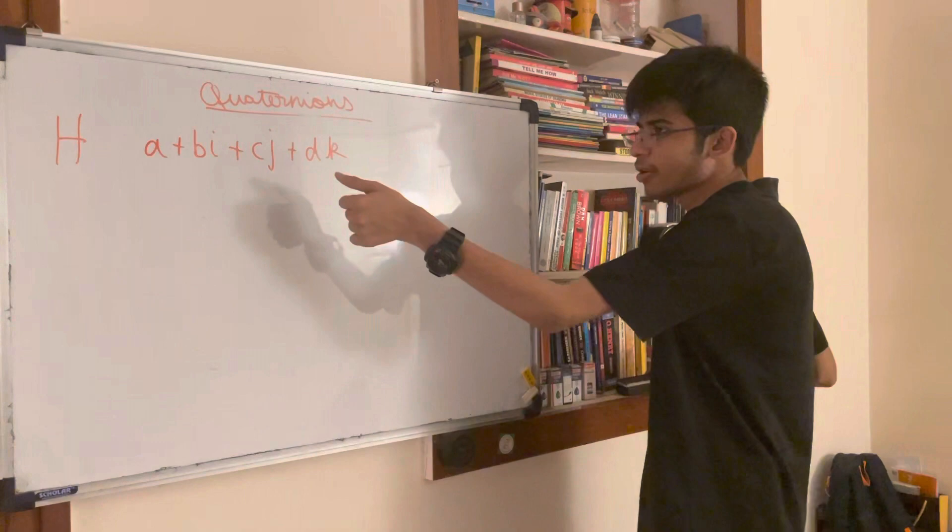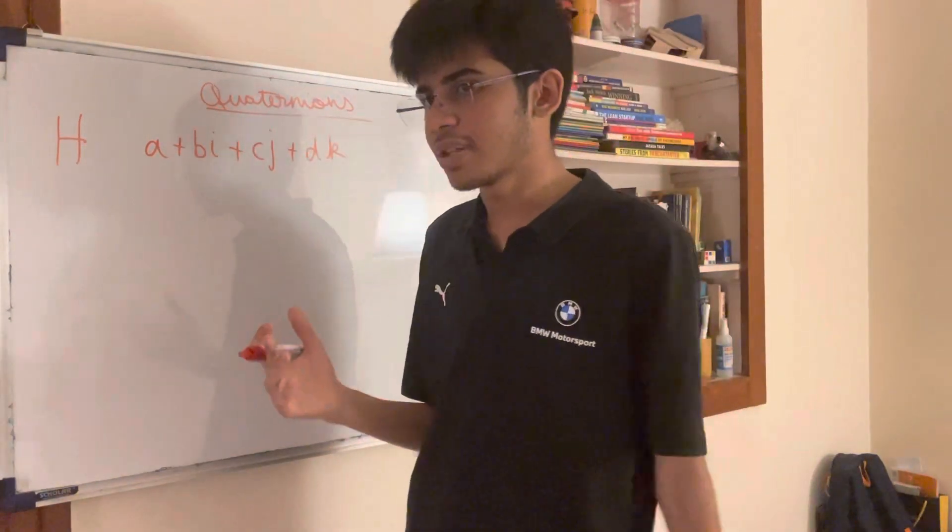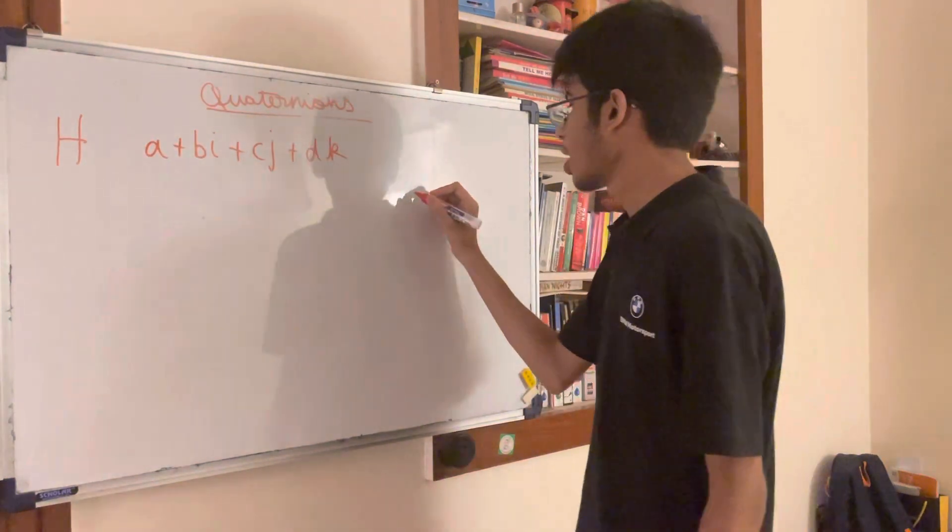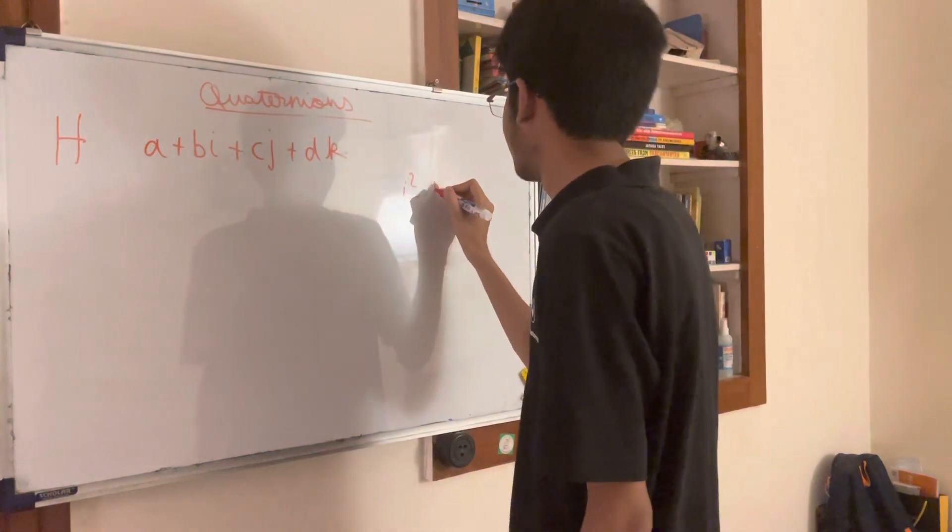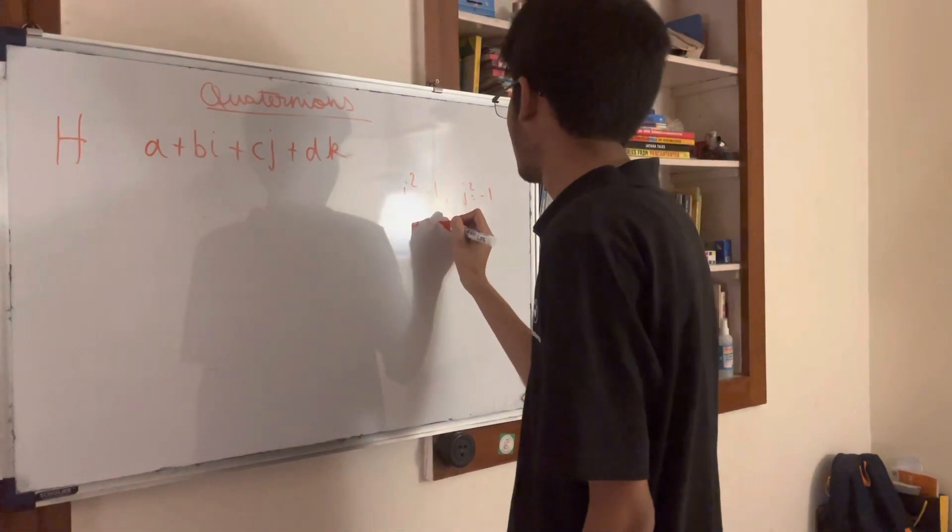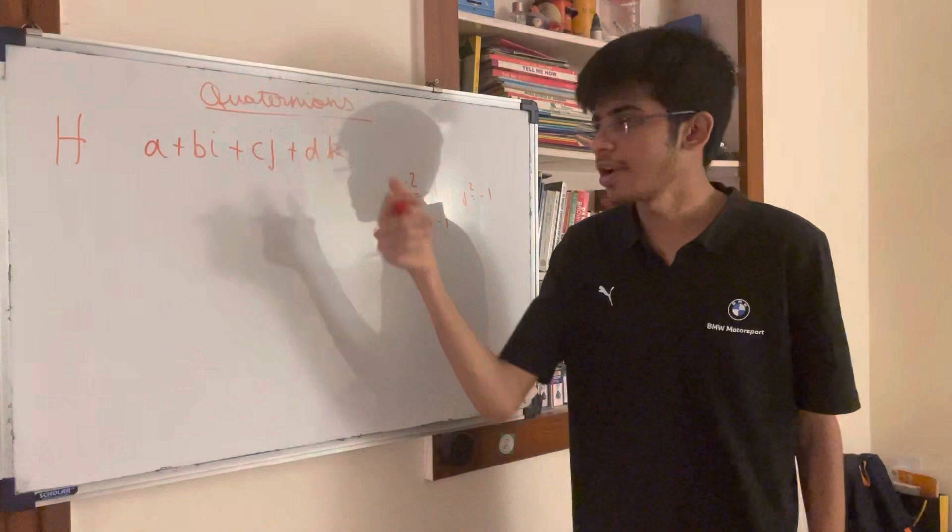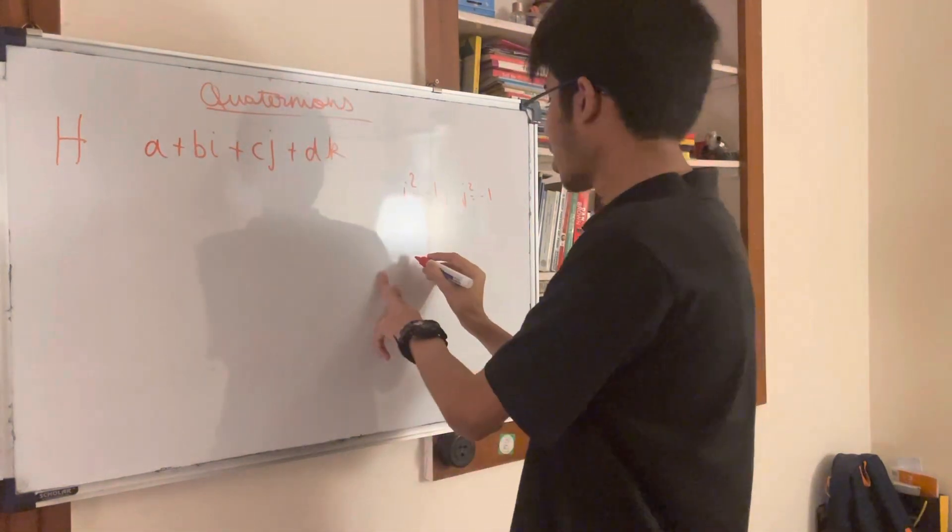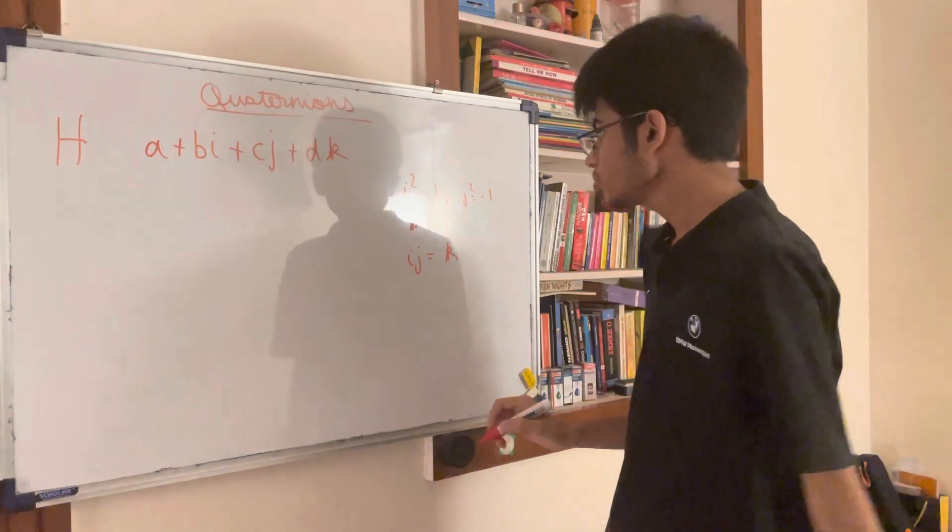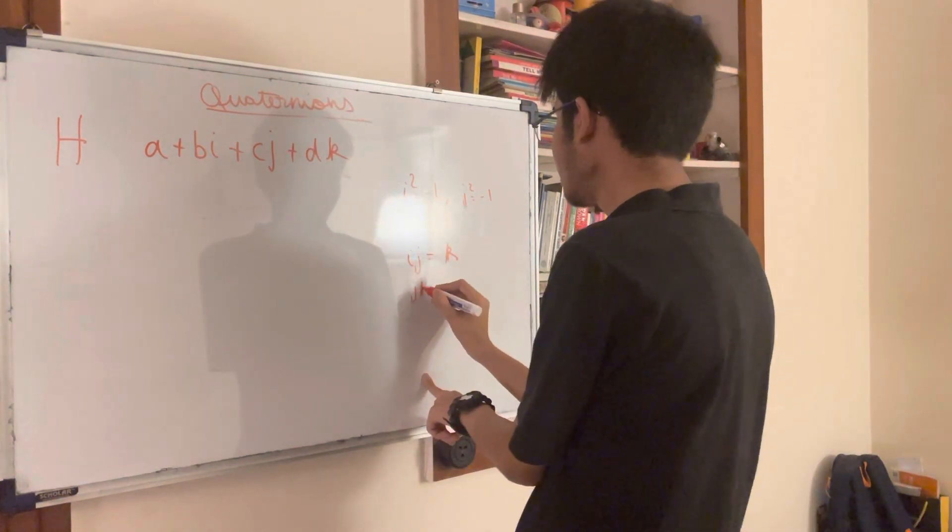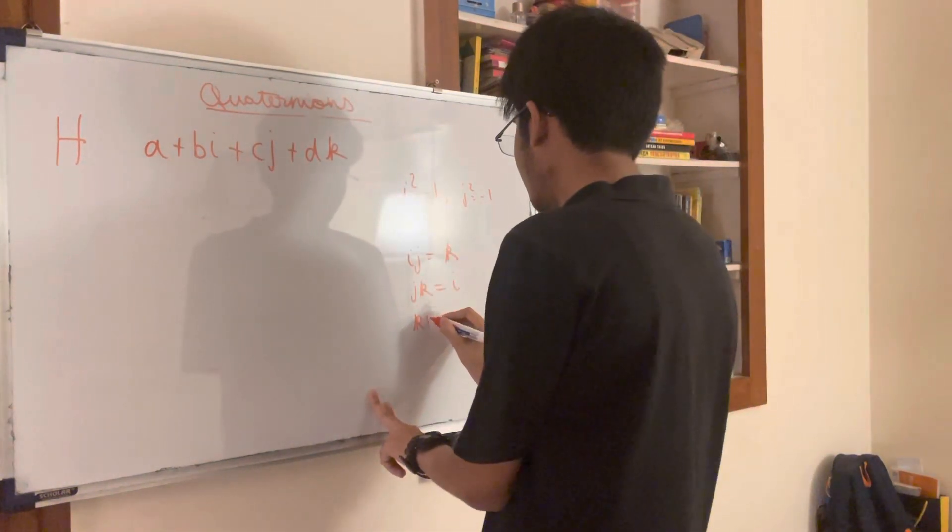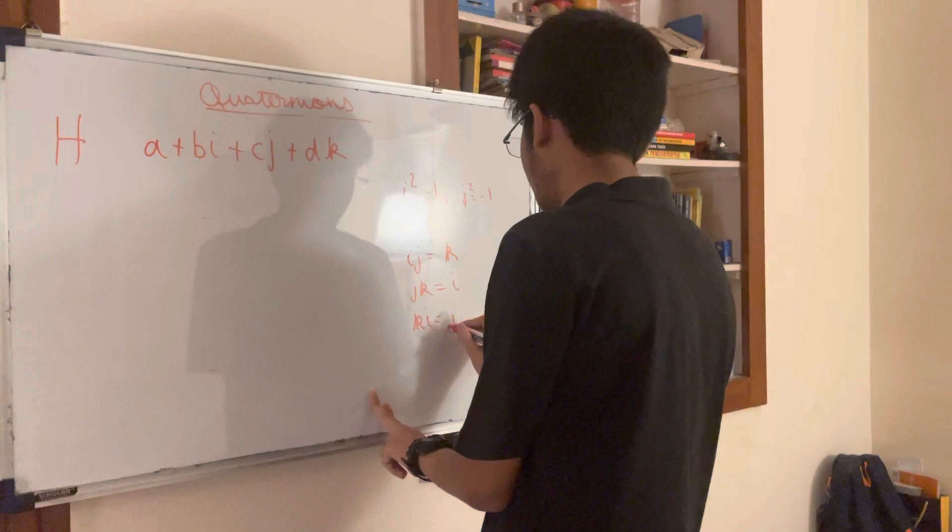Now, what are i, j, and k? Well, i, j, and k are pretty similar to what we just said. i squared equals minus 1, j squared equals minus 1, and k squared equals minus 1. And how do they relate? Well, i into j equals k, j into k equals i, k into i equals j.